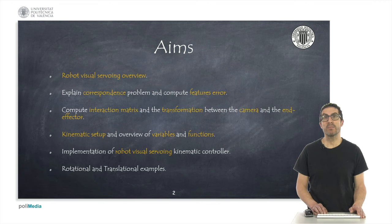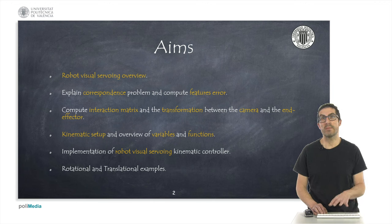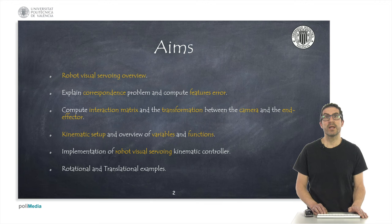Then, I will explain how to compute the interaction matrix and how to obtain the transformation between the camera and the end effector. And we will also see a brief overview about the variables and functions that I used in order to compute the robot kinematics.